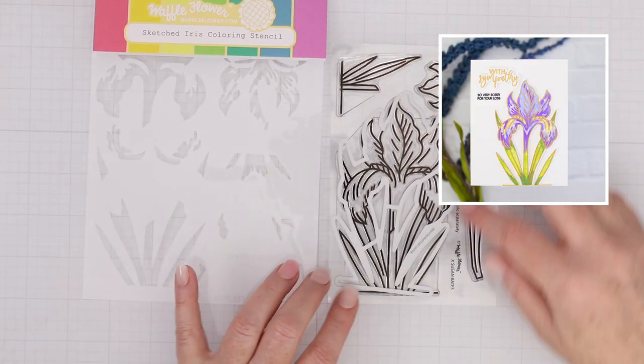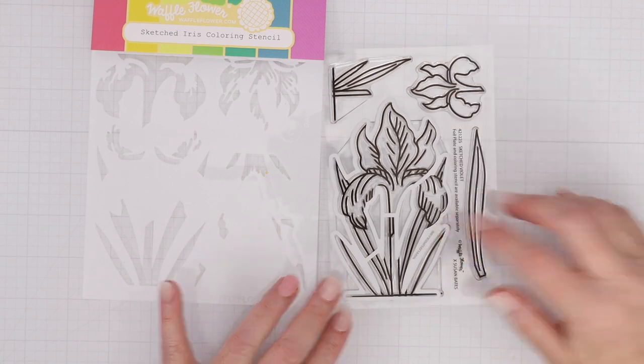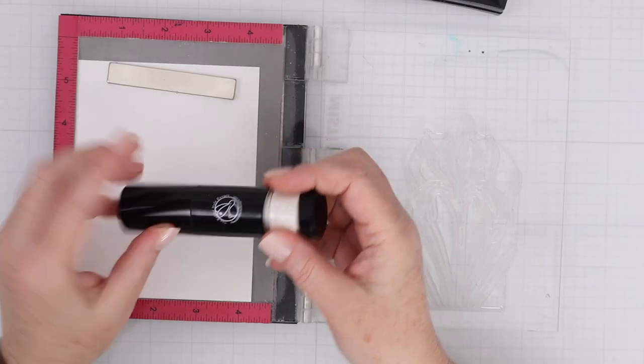Next, let's combine the Sympathy set with their new sketched violet set in two different ways. Sorry, I called it a sketched violet. It's actually a sketched iris coloring stencil, stamps, and dies.